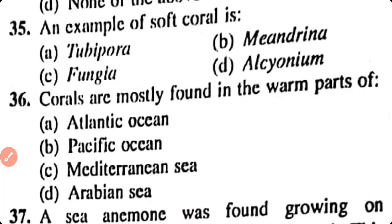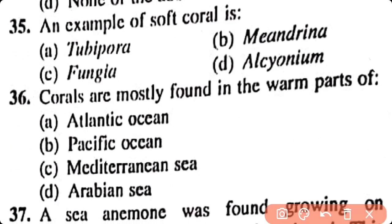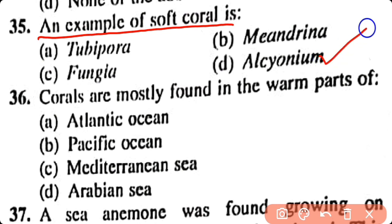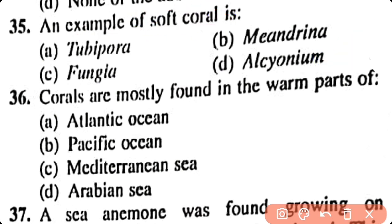Question number 35. An example of soft coral is: Tubipora, Meandrina, Fungia, Alcyonium. Option D. Alcyonium is an example of soft coral.